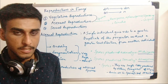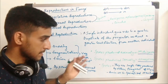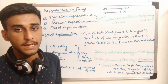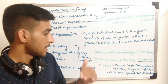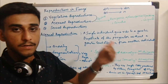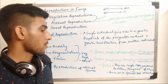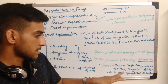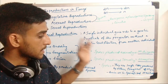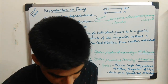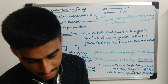We will be discussing each point in detail in coming slides. The definition of spores: spores are single cells produced either by fragmentation of mycelia or in specialized structures.